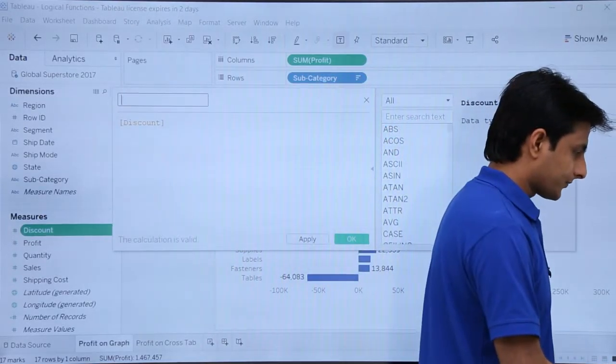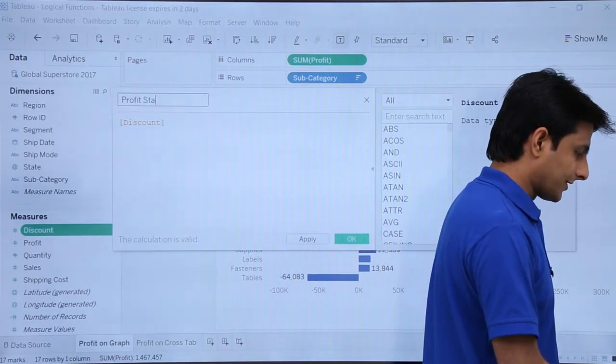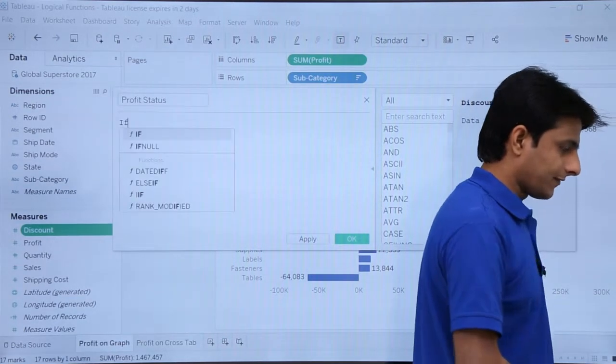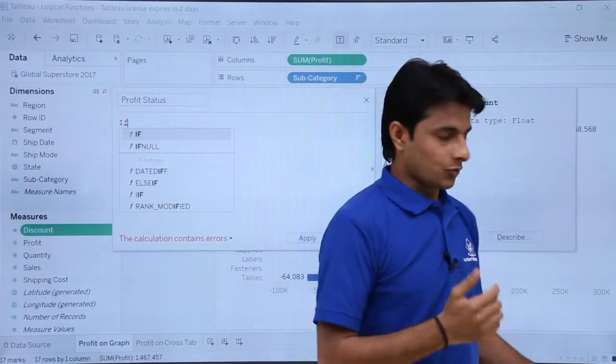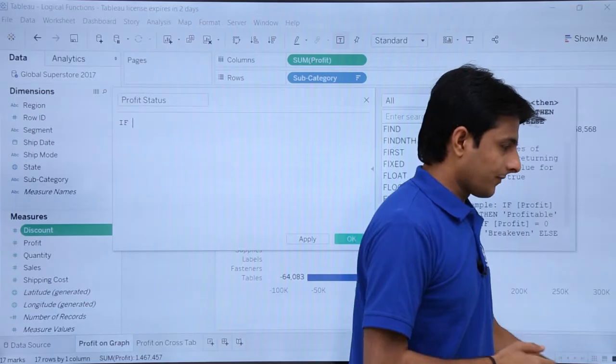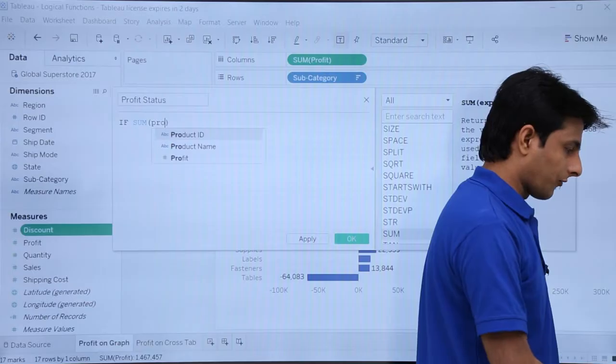I'll name it as sales profit status. Here I'll type as IF. And if you see there's an IF, these are the different conditions which are here. So once you select this IF, press tab key and you can just type as SUM OF, press tab key. I have the profit.